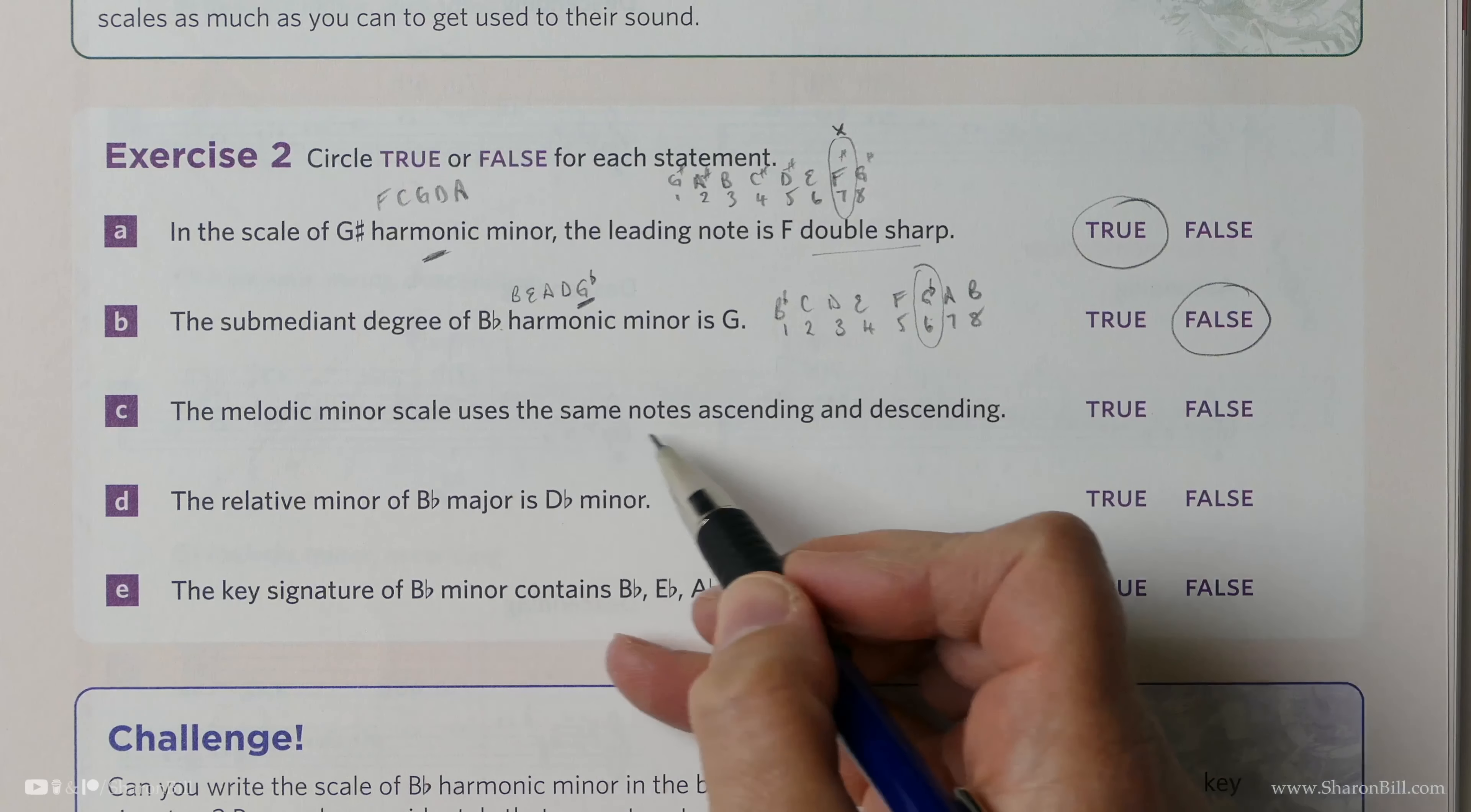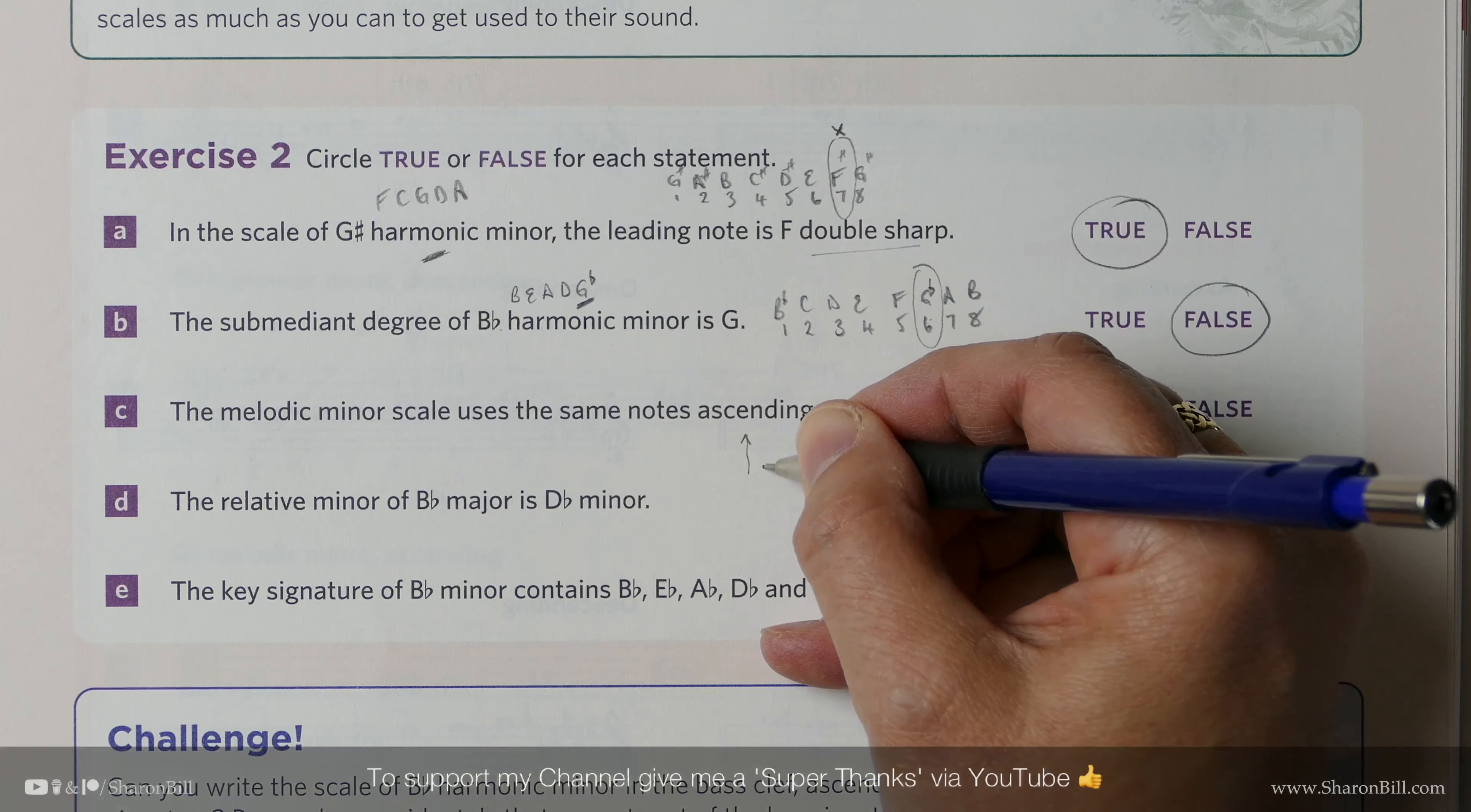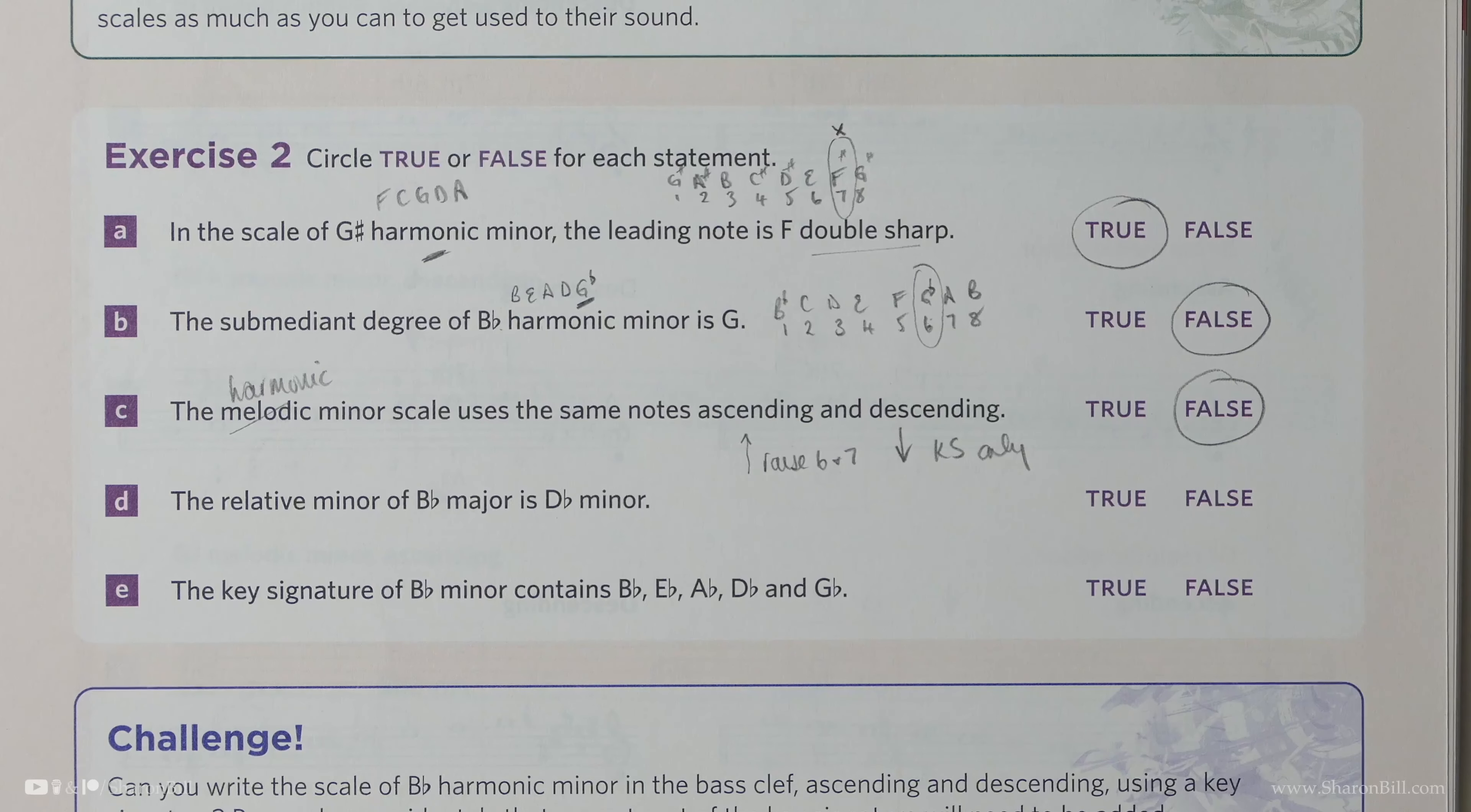Is it true or false that the same notes are used ascending and descending in the melodic minor scale? Well, we know that's false, because we know from the little formula that we looked at last lesson, ascending we raise the sixth and the seventh, and descending is the key signature only. So that's false, and it's the harmonic minor, not the melodic minor, that's what that is.